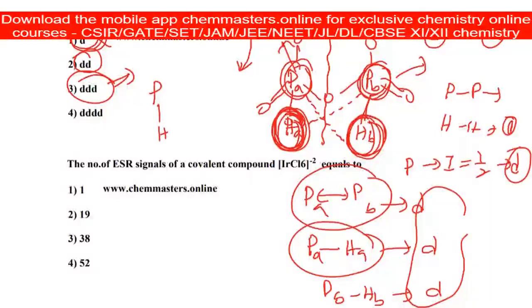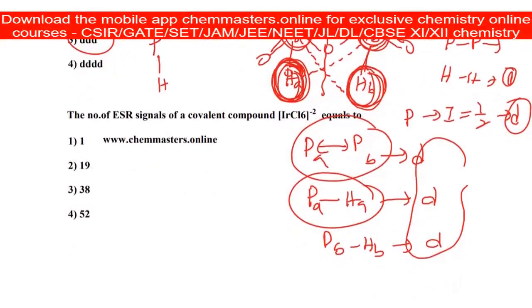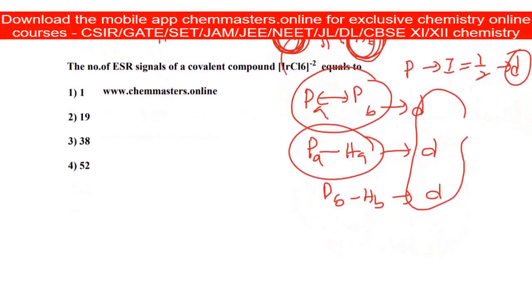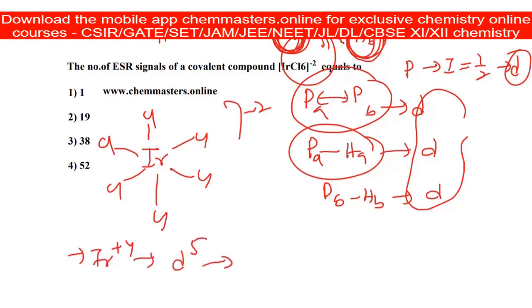The number of ESR signals of a covalent compound, iridium hexachloride. So here it is an octahedral complex. Let's draw its structure minus two, in which iridium is in plus four oxidation state, so it has five electrons in the d orbital.